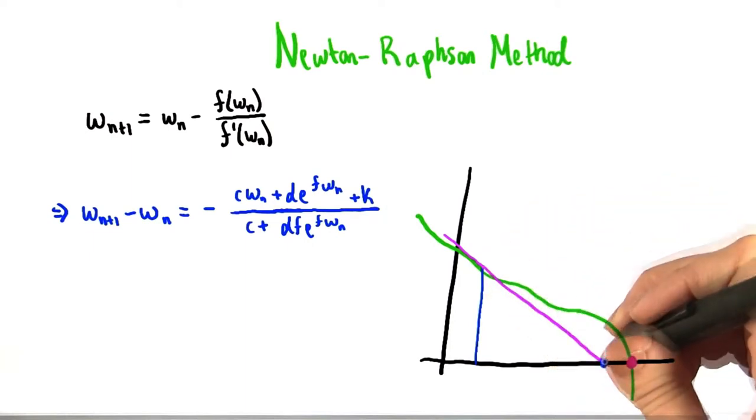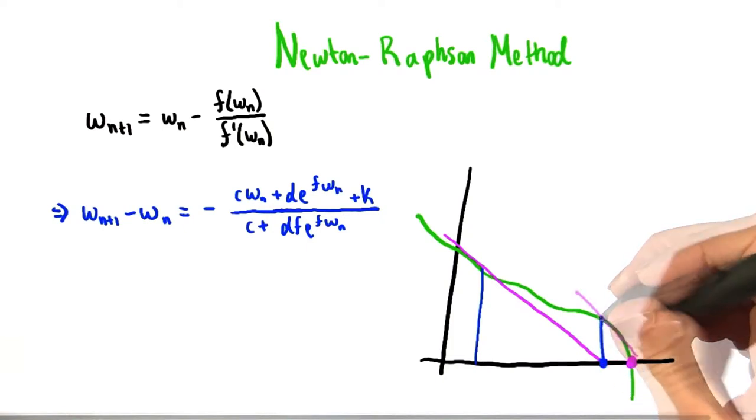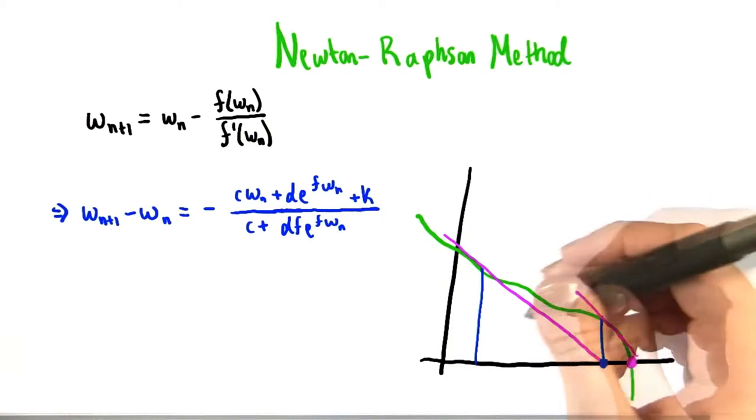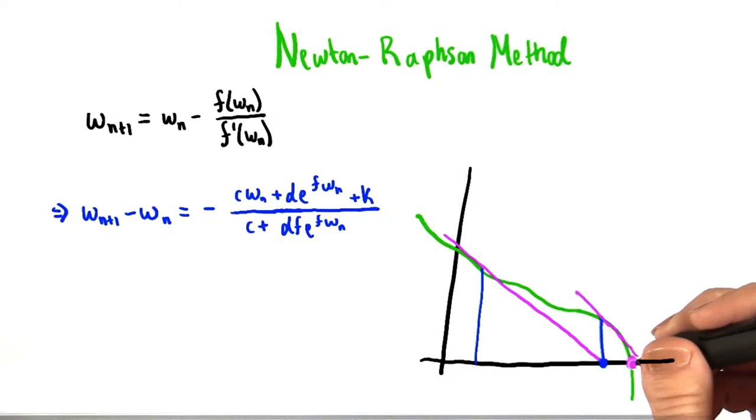Now the next x value that I guess is going to be the point where that tangent line intersects the x axis in this case. Then I'll do the same thing for this point, and so on and so forth. And eventually, my results will converge to the actual point that I'm looking for.